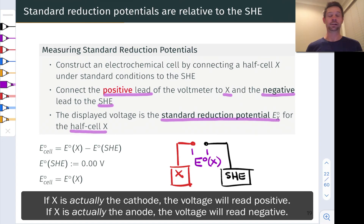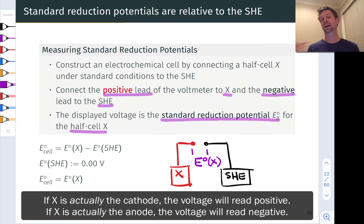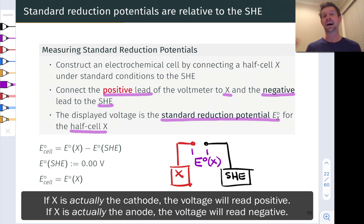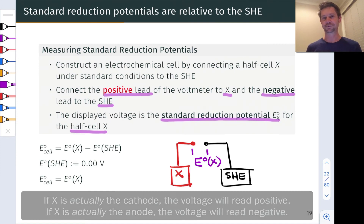And again, that half cell is going to involve the reduced component and an oxidized component — something like copper metal and Cu²⁺, lead metal and Pb²⁺, or even something like oxalate anion and carbon dioxide, where oxalate is the reduced form of carbon dioxide.